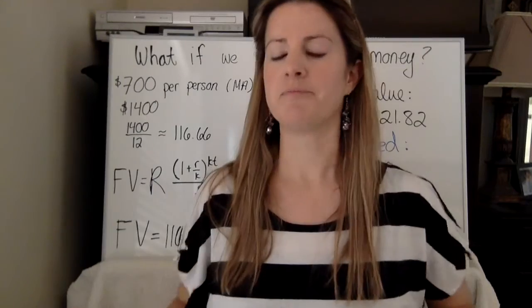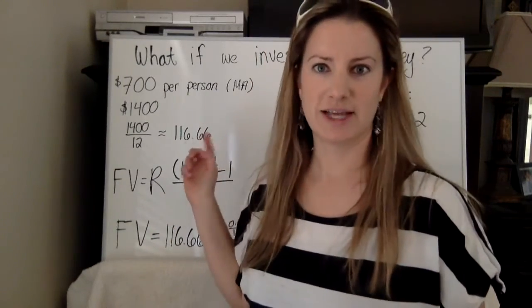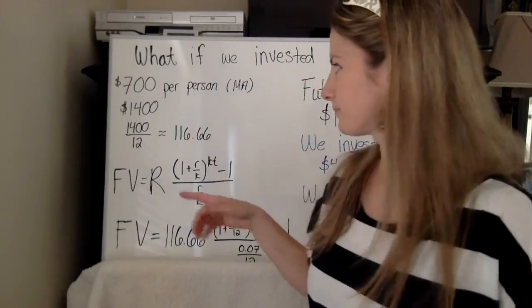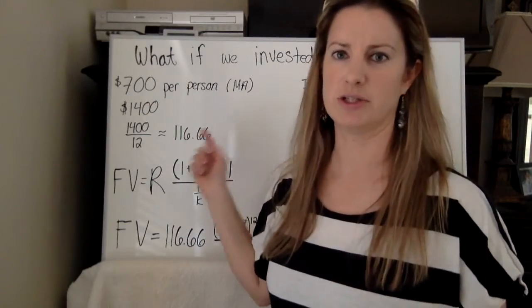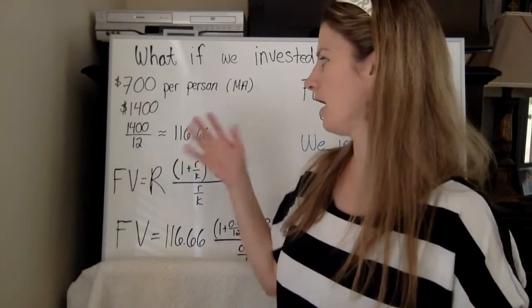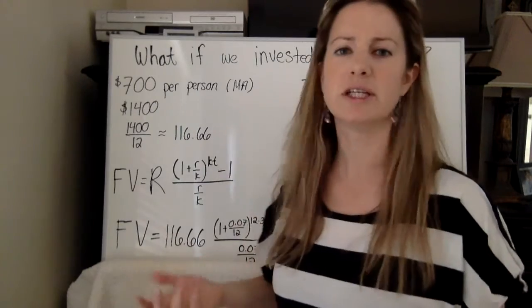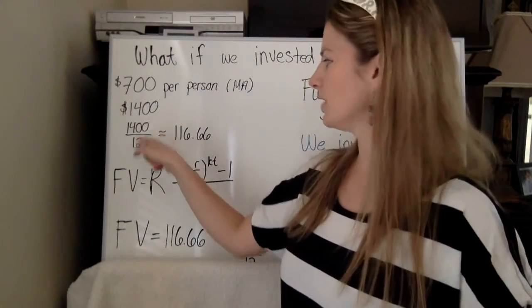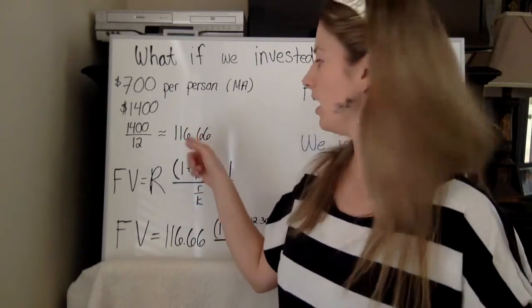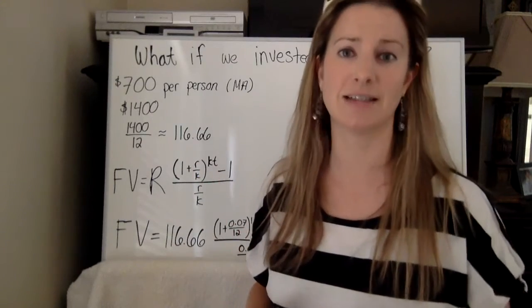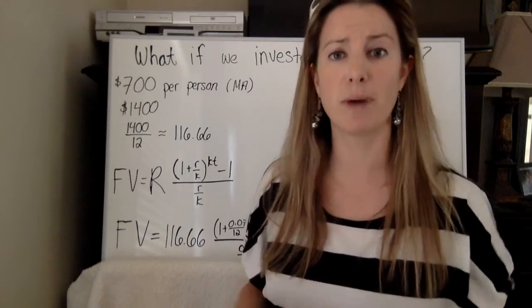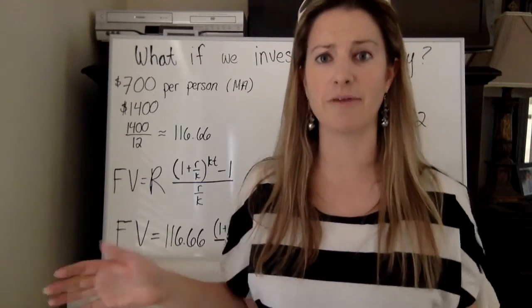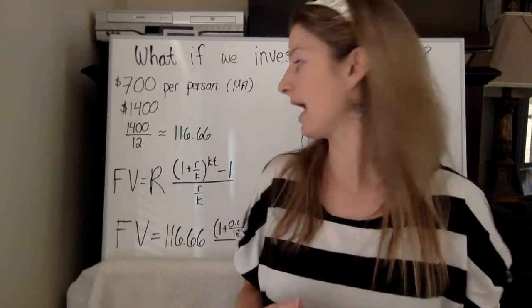So I'm going to use Massachusetts as the example. $700 per person in Massachusetts. So there's two of us. So our household is going to spend $1,400 per year. So I divided that by 12 to get $116.66 is how much we're spending basically per month on lottery tickets. Now we're not spending that much, but the average person in Massachusetts, you know what I mean? That's the average.